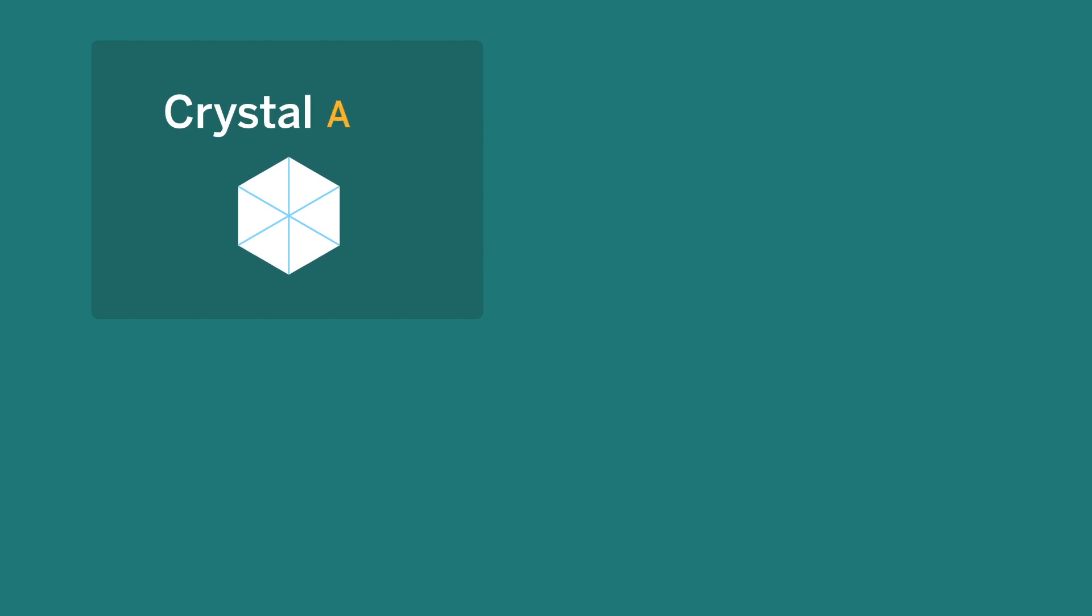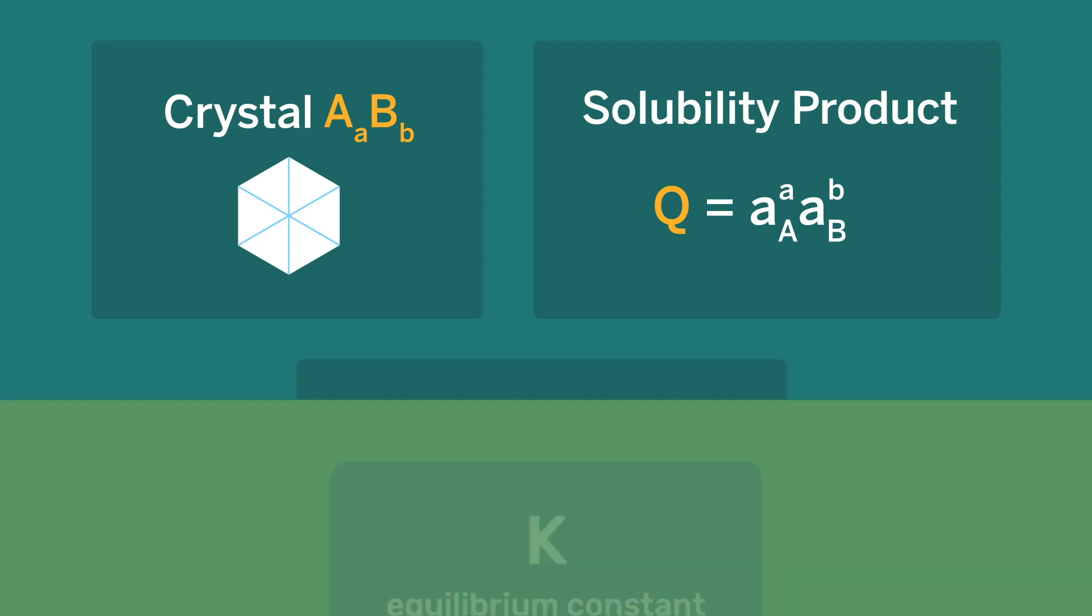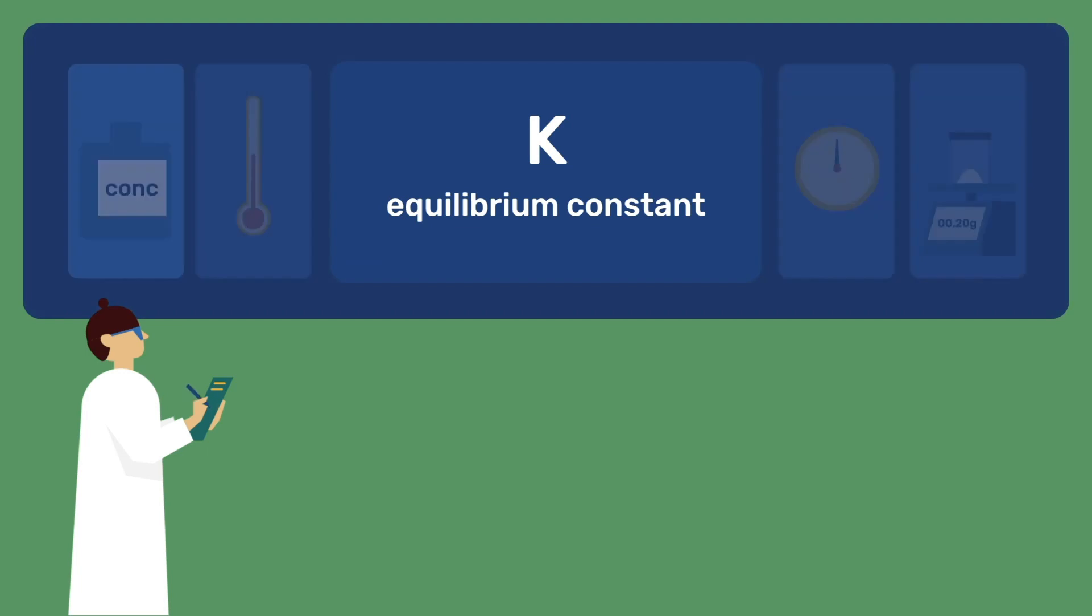For crystal AABB, the solubility product Q is the activity of A to the power small a times the activity of B to the power small b. For dilute solutions, activities can be approximated by molar concentrations, which are denoted with square brackets. For a reminder on this, please view our video on chemical thermodynamics.